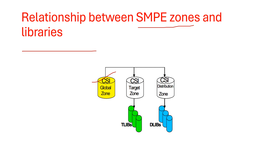We have three zones. First, the global zone, which contains information about SYSMODs — system modification packages — and their relationships, serving as a central repository of software changes. Next is the target zone, which records information about the status and structure of the operating system libraries containing the executable code needed to run the system. Last is the distribution zone, which contains the libraries holding the master copy of all components of the operating system.